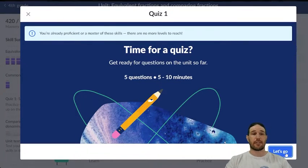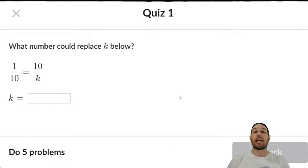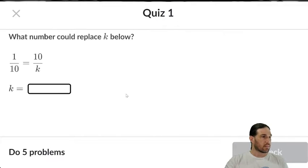Five questions. I doubt it'll take us five to ten minutes. What number could replace k below? We've got 1 over 10 equals 10 over k. Okay, it would be 100.